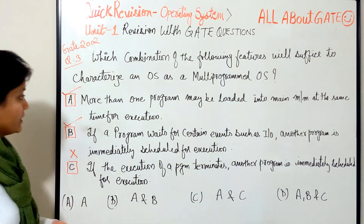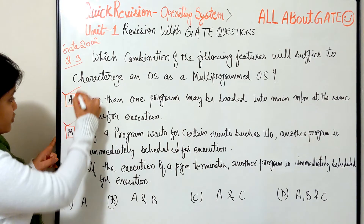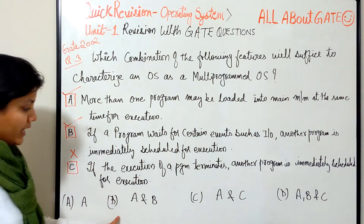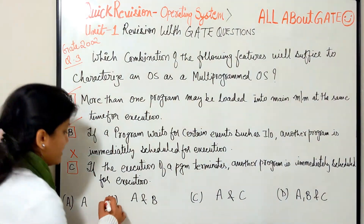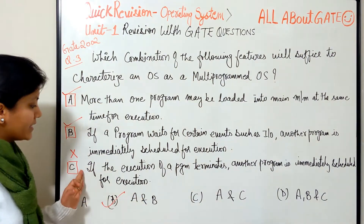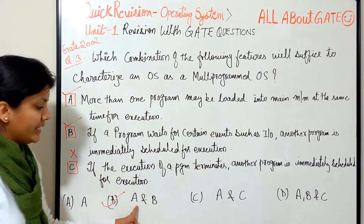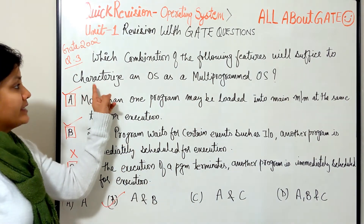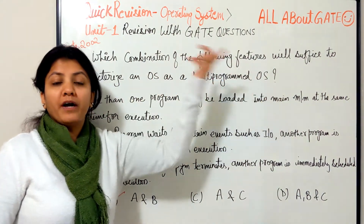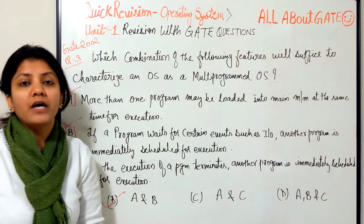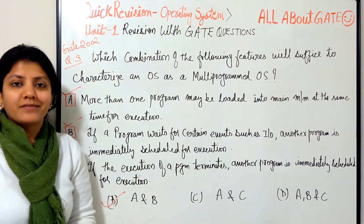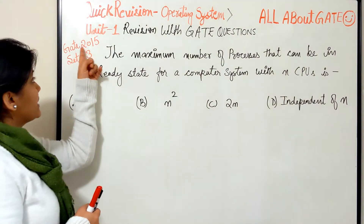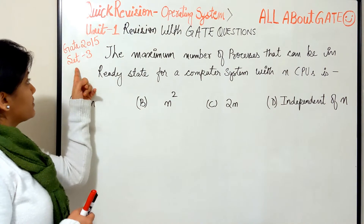So out of the three statements, statement 1 is true, statement 2 is true, and statement 3 is not. The answer is A and B — we don't need C. Just A and B are sufficient to characterize an operating system as a multi-programmed operating system. The next question is from GATE 2015, set 3.